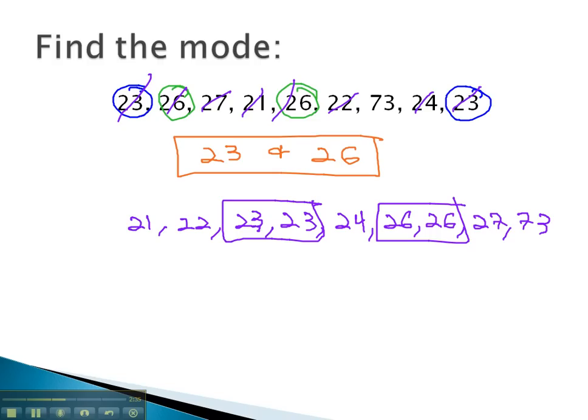The mode is simply the average that occurs most often in the data set.